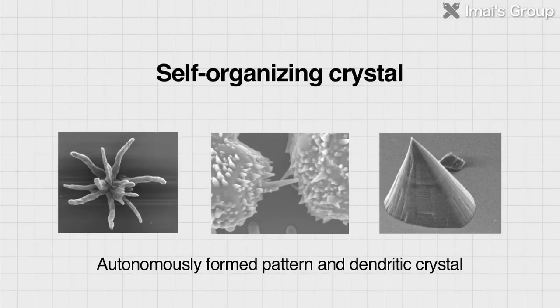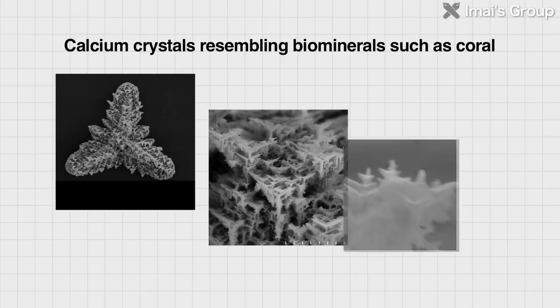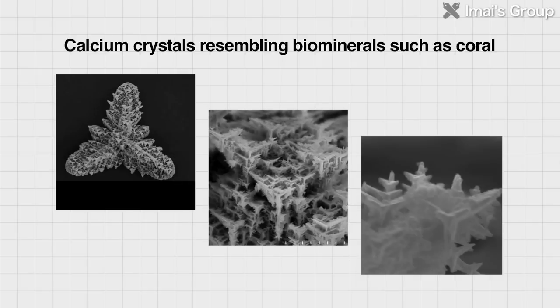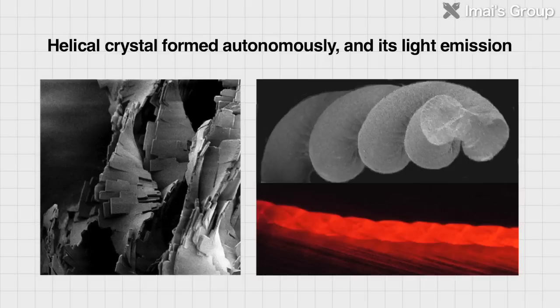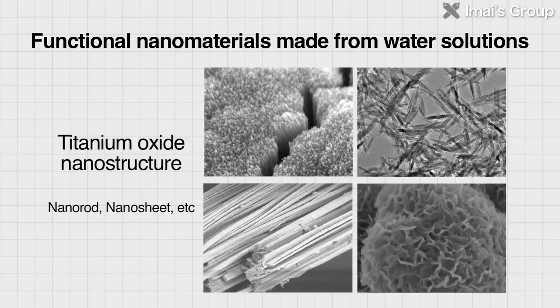To make such materials, researchers must imitate biomineral synthesis methods. Biomaterials with layered structures are essentially formed through self-organizing crystal growth controlled by various organic polymers. Using special water-soluble polymers, it's possible to synthesize nanostructures like those of seashells and birds' eggs in water solutions.